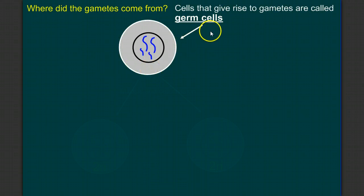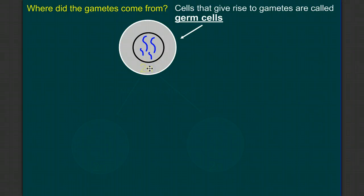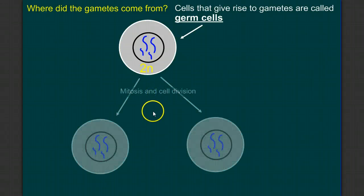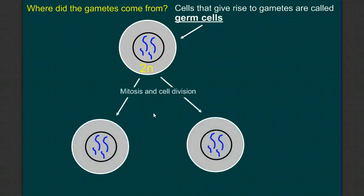The cell that gives rise to gametes is called a germ cell, and it's diploid, meaning it has two of every type of chromosome. In this case, we have four chromosomes in two pairs — two long ones and two short ones. So if we use mitosis and cell division, like we looked at in our last video, the result would be two cells that were also diploid.